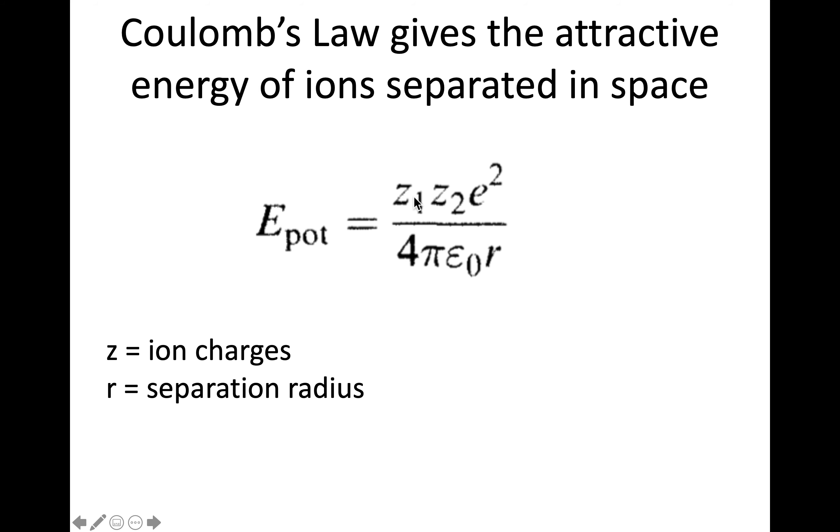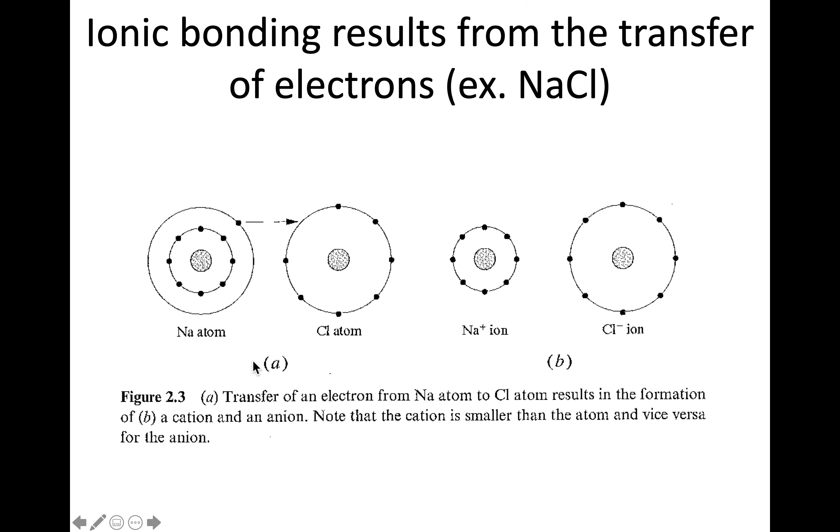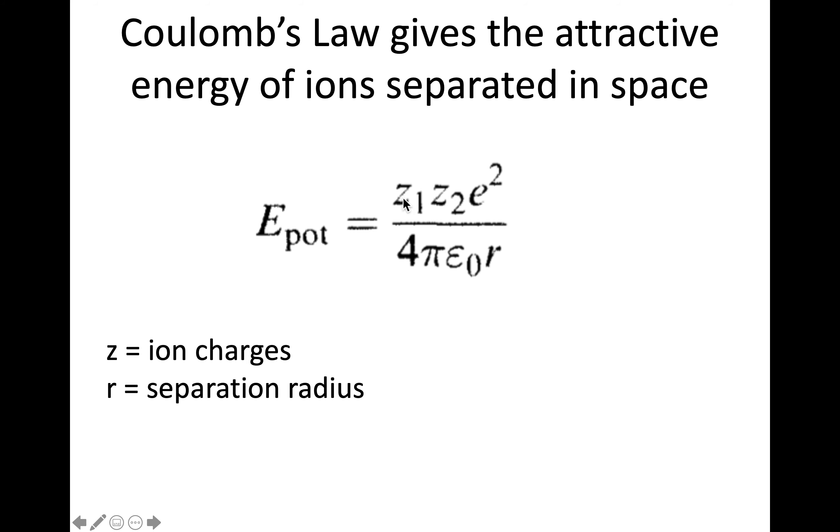So we have Z1, Z2. These are the charges of the ions. So if we go back we have Na plus 1 and Cl minus 1. And so the charges are the unit charges. So that's 1 and minus 1. Then we multiply that by the charge of an electron which is e. So this is a constant that we can find.